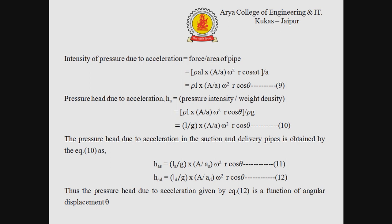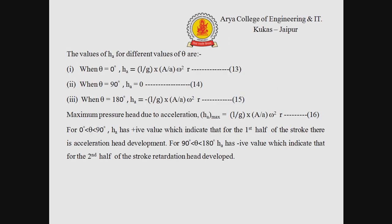The pressure head due to acceleration is a function of angular displacement theta. When theta = 0°, acceleration head h_a = (l/g)(A/a)ω²r (equation 13). When theta = 180°, h_a = −(l/g)(A/a)ω²r (equation 15). The maximum pressure head due to acceleration is given by equation 16. For theta between 0° and 90°, h_a is positive, indicating acceleration in the first half of the stroke. For theta between 90° and 180°, h_a is negative, indicating retardation in the second half of the stroke.